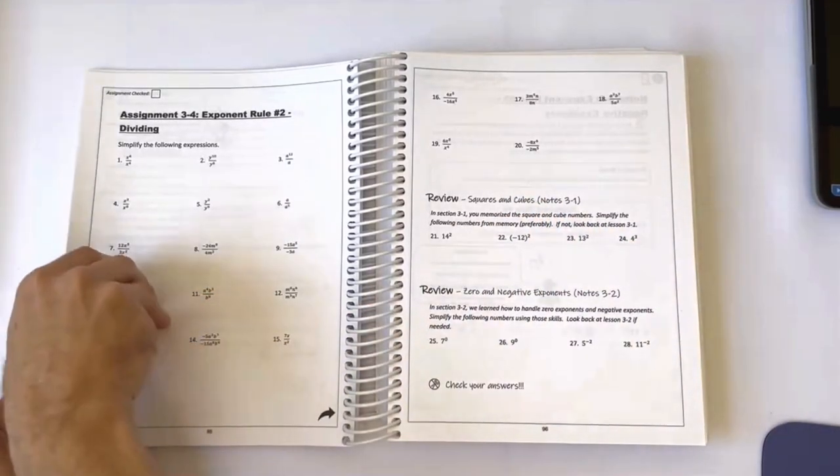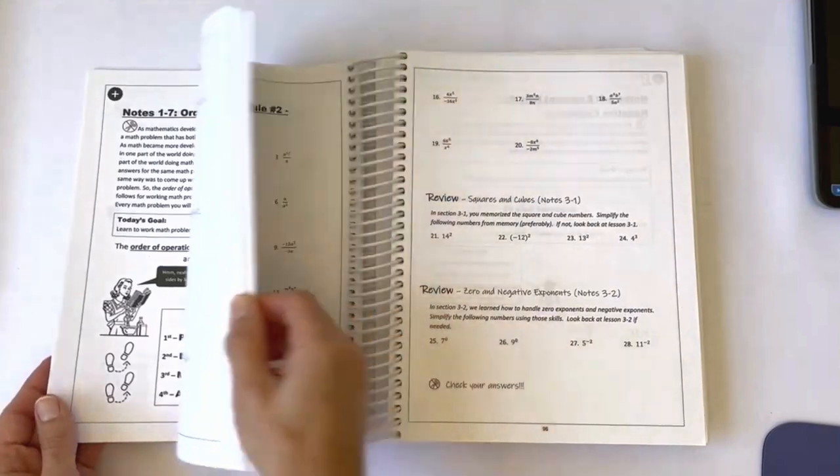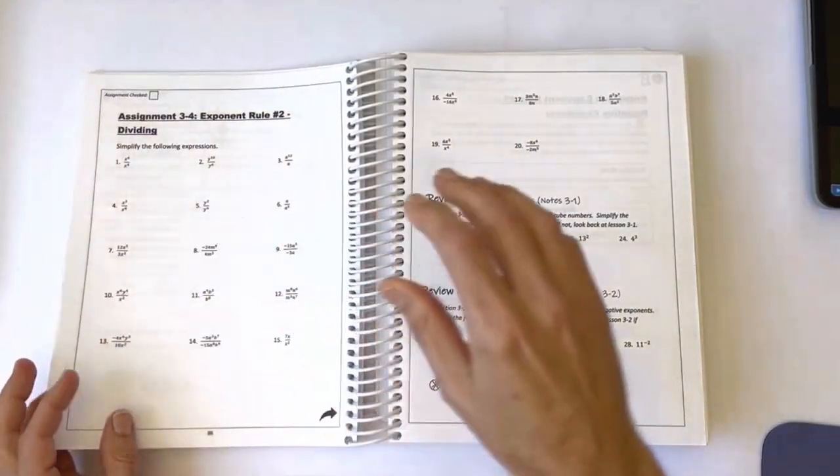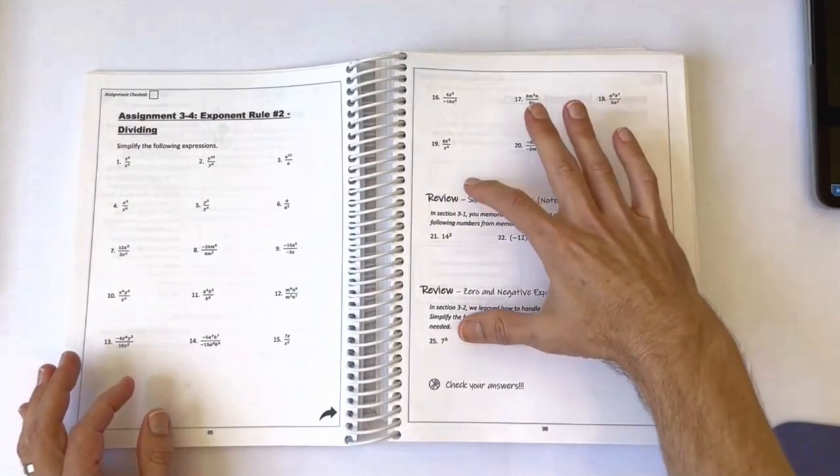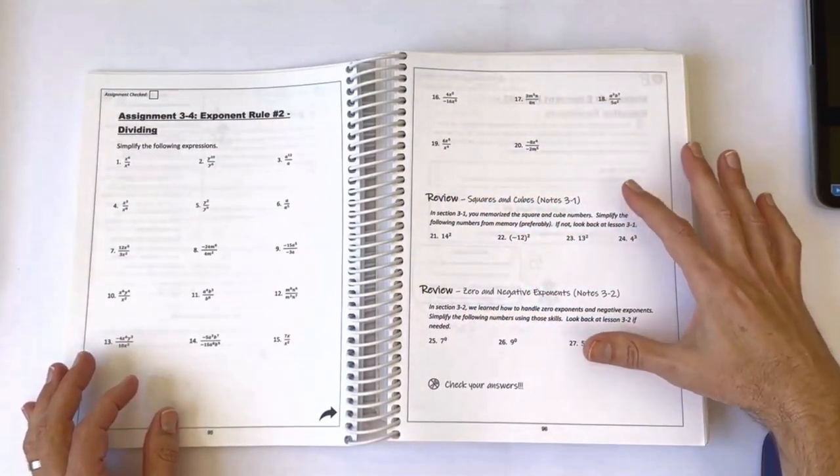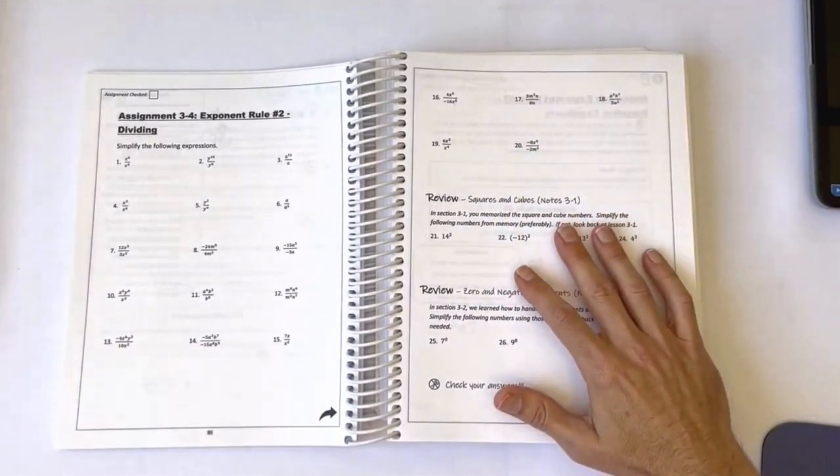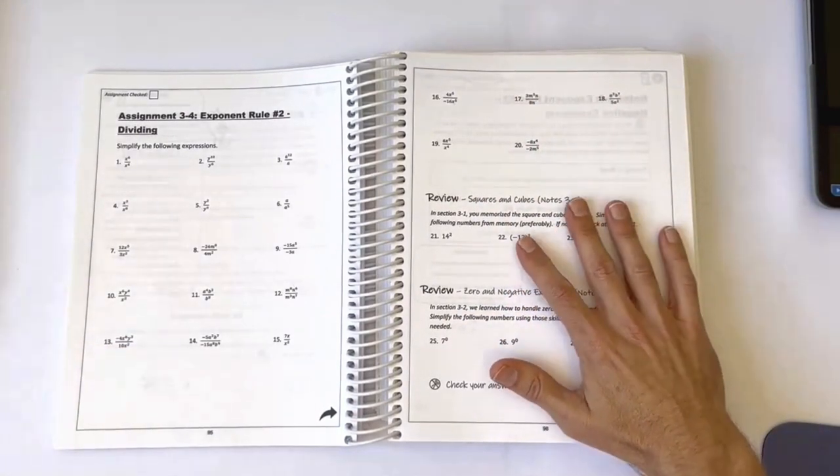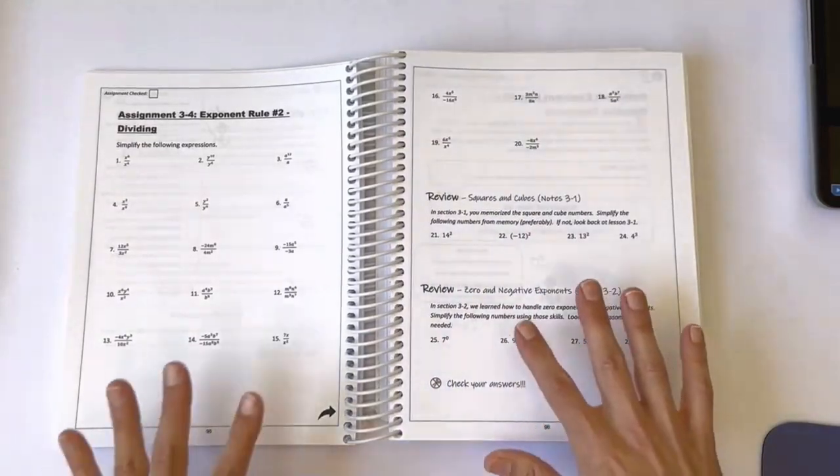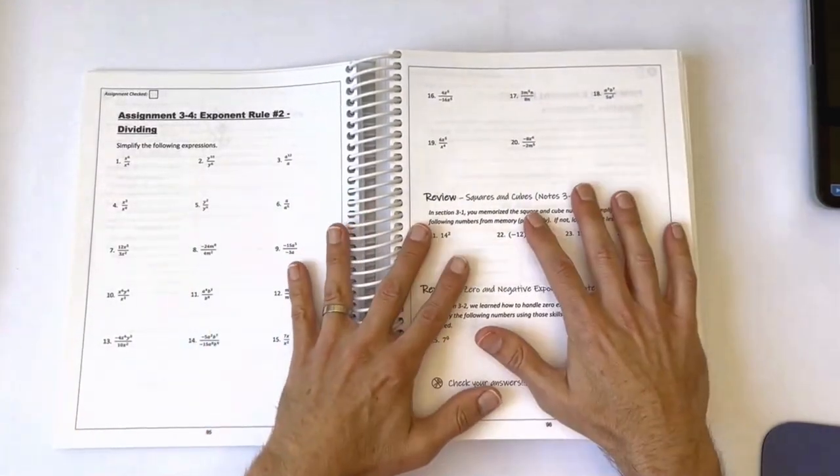For starters, I'm always flipping back to previous material with the student hoping they'll get in the habit of doing that themselves. Most homework assignments have intentional review problems. By intentional, I mean that the review is not just randomly thrown in there for the sake of review. If we're approaching a lesson that uses a previously learned concept, then we begin to review that concept days ahead of time.